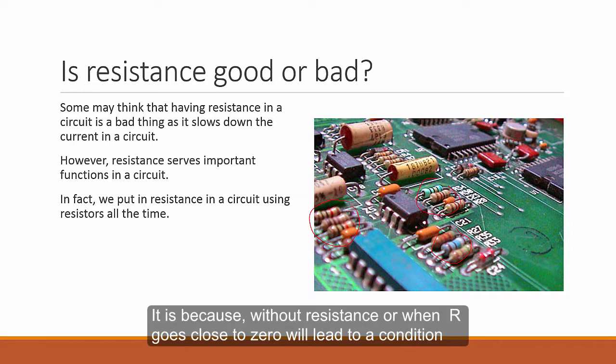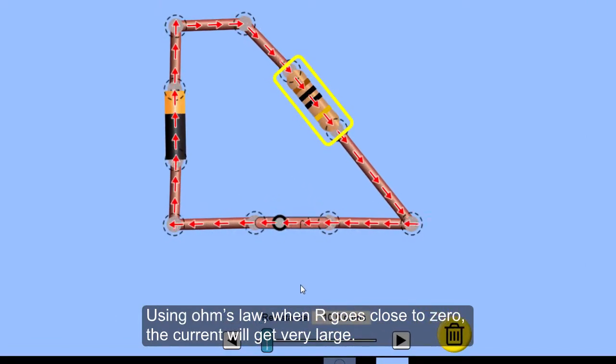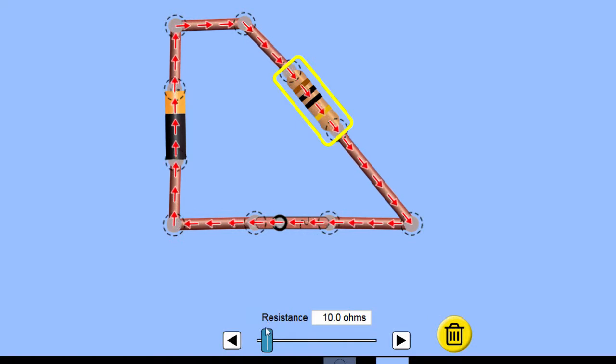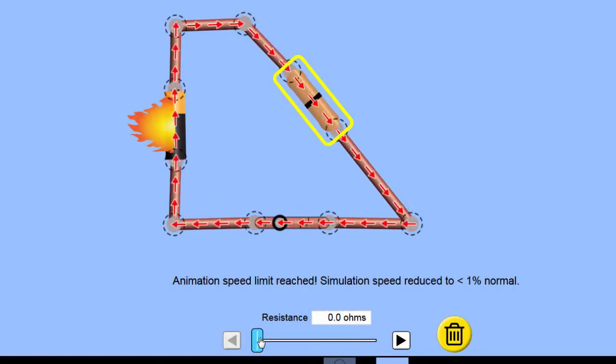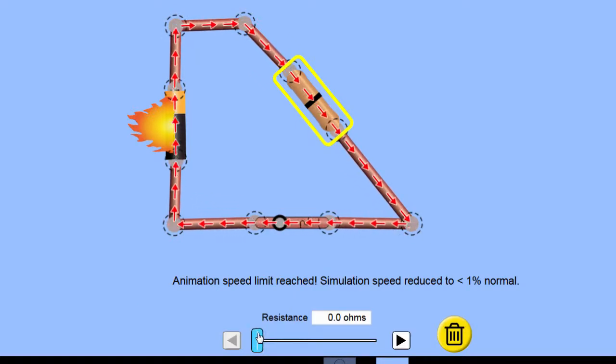It is because without resistance or when R goes very close to zero will lead to a condition known as short circuit. Using Ohm's law, when R goes very close to zero, the current gets very large. So what will happen is that when we reduce the resistance, the current goes faster and faster. But if we reduce the resistance by too much, the current will go so fast that the electrical circuit overheats and causes electrical fire to break out. And that's not what we want.